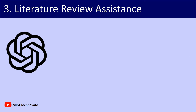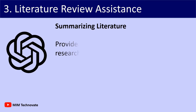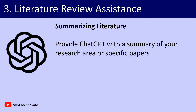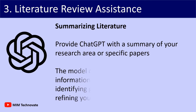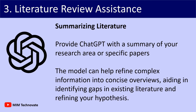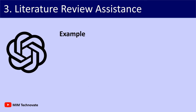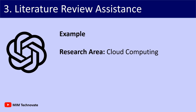Number 3: Literature Review Assistance — Summarizing Literature. Provide ChatGPT with a summary of your research area or specific papers. The model can help condense complex information into concise overviews, helping in identifying gaps in existing literature and refining your hypotheses. For example, the research area is cloud computing applications.